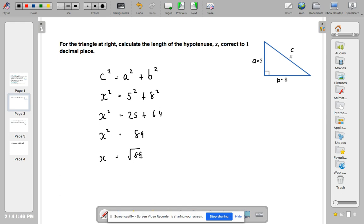So the square root of 89. So 89 square root is 9.43 to the nearest couple of decimal places. So X equals 9.43.